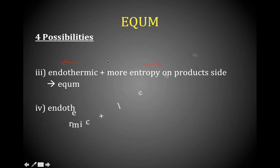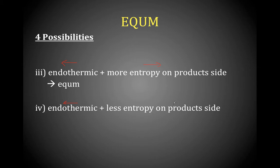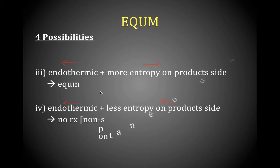And finally, if the reaction is endothermic — favoring the reactants — and there's less entropy on the product side, meaning more entropy on the reactant side, both factors favor the left, the reverse reaction. That's a case where we get no reaction. So we have four possibilities: completion, equilibrium, equilibrium, and no reaction.